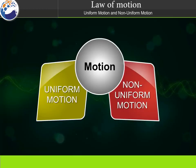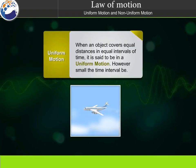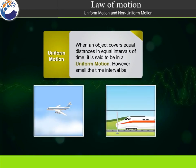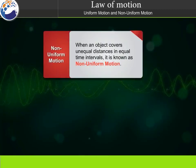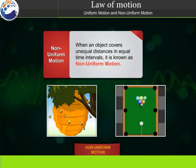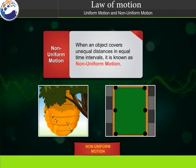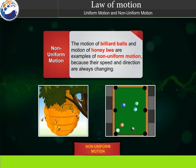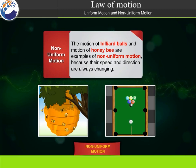Uniform motion: when an object covers equal distances in equal intervals of time, it is said to be in uniform motion, however small the time interval may be. The motion of a plane at high altitude is a good example. Non-uniform motion: when an object covers unequal distances in equal intervals of time, it is known as non-uniform motion. The motion of billiard balls and honeybees are examples, because their speed and direction are always changing.